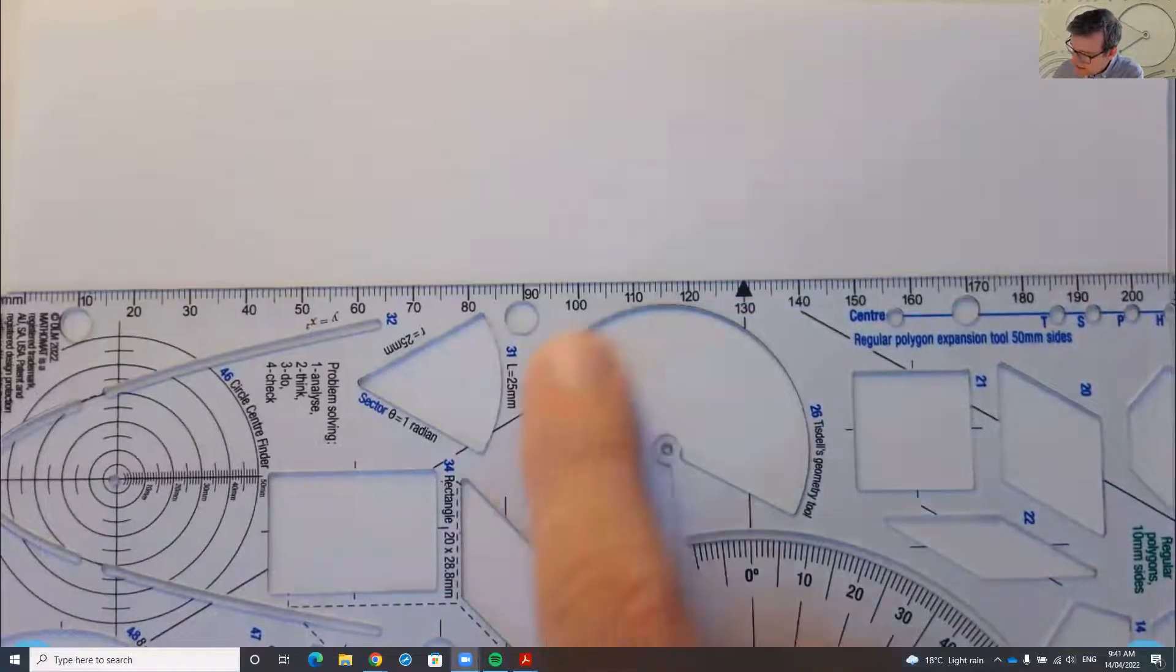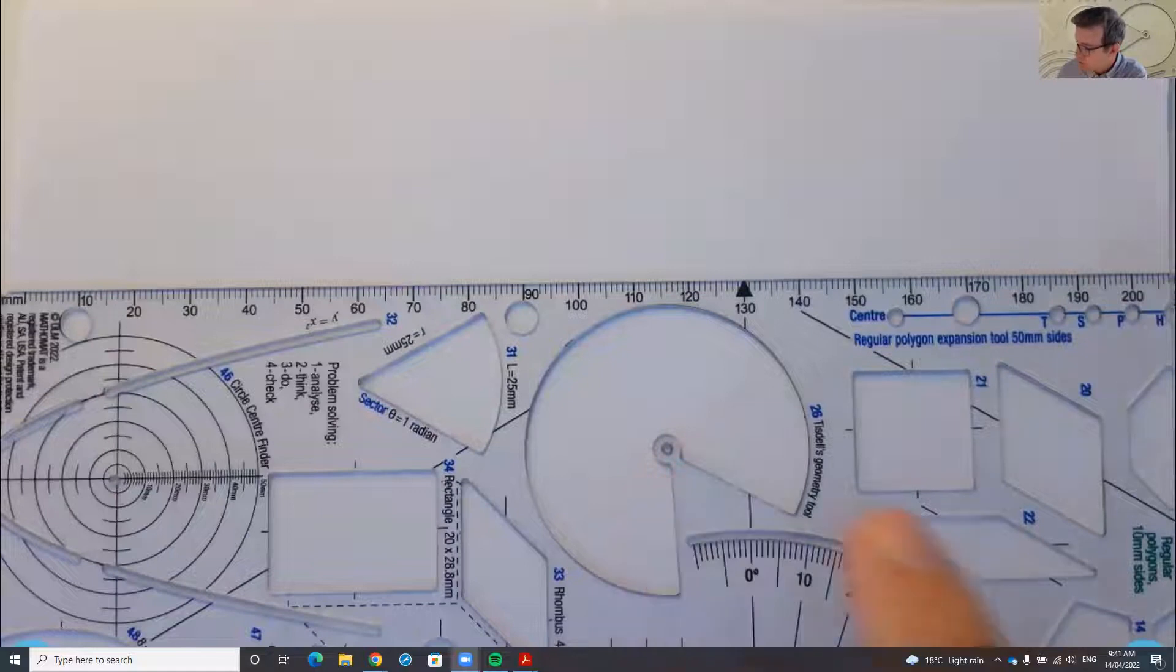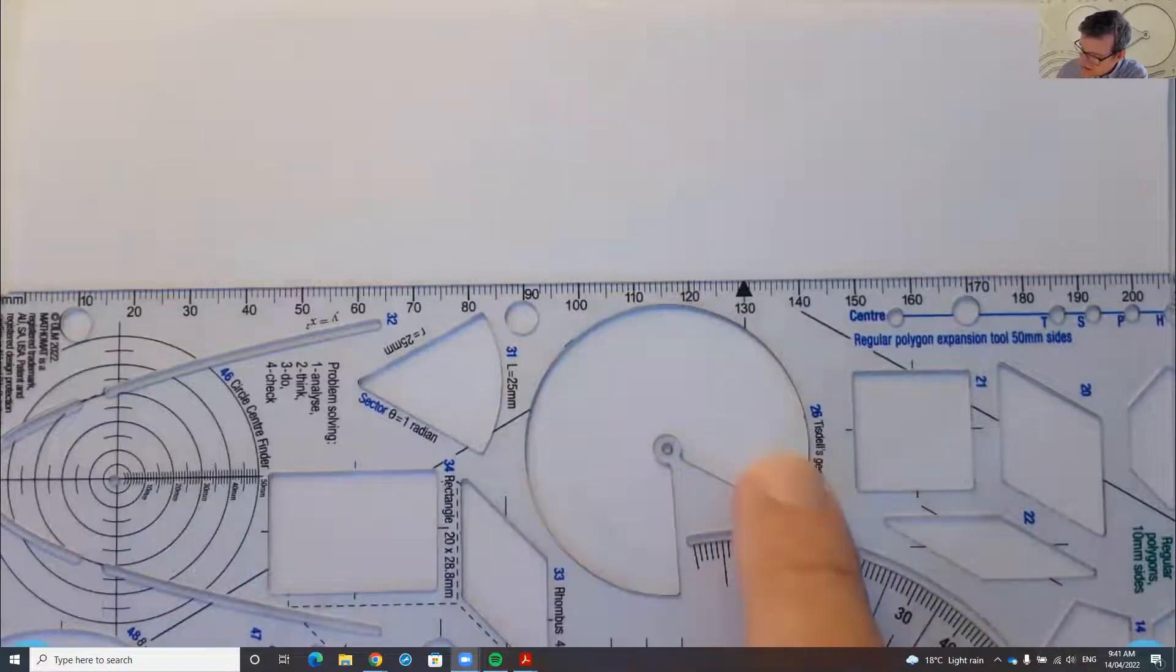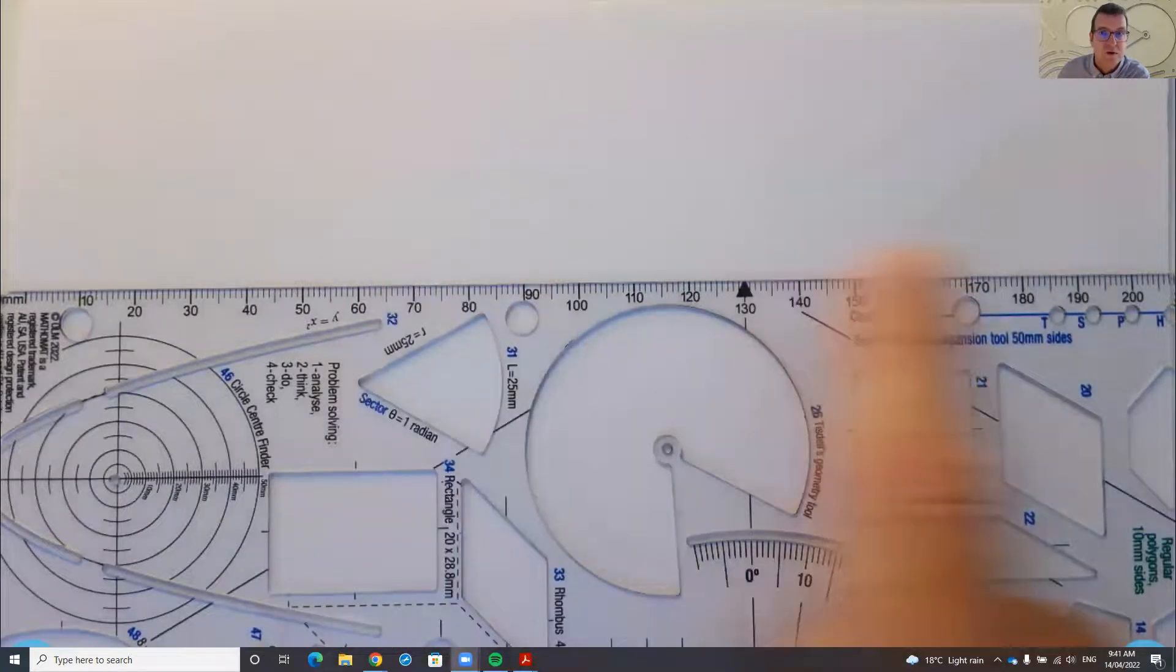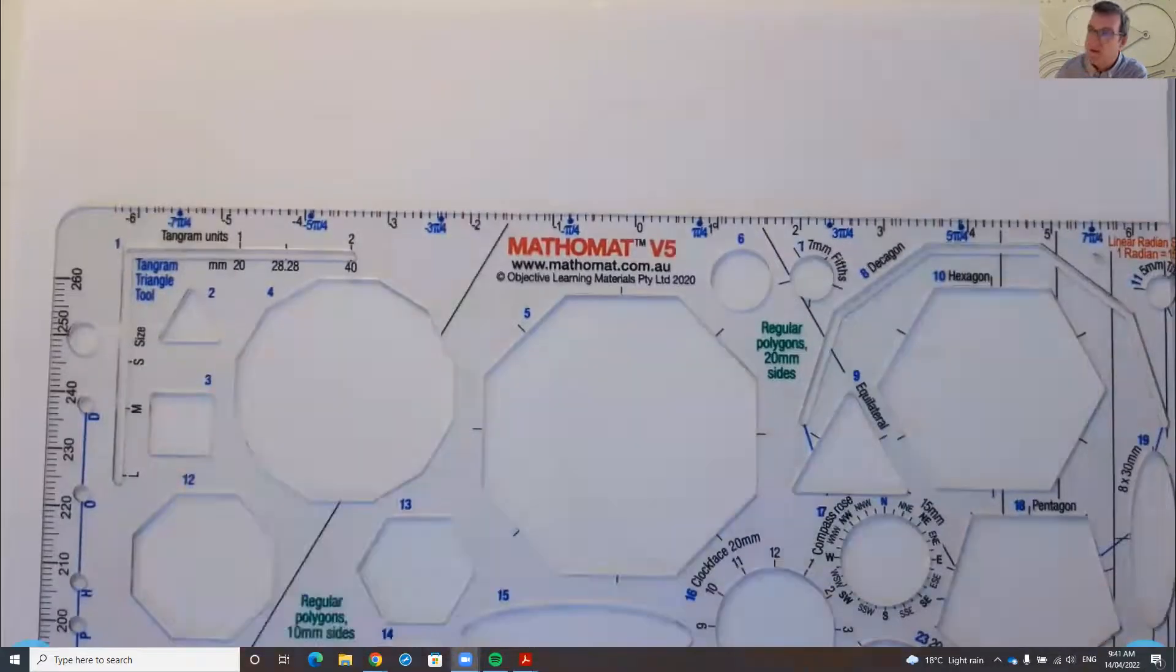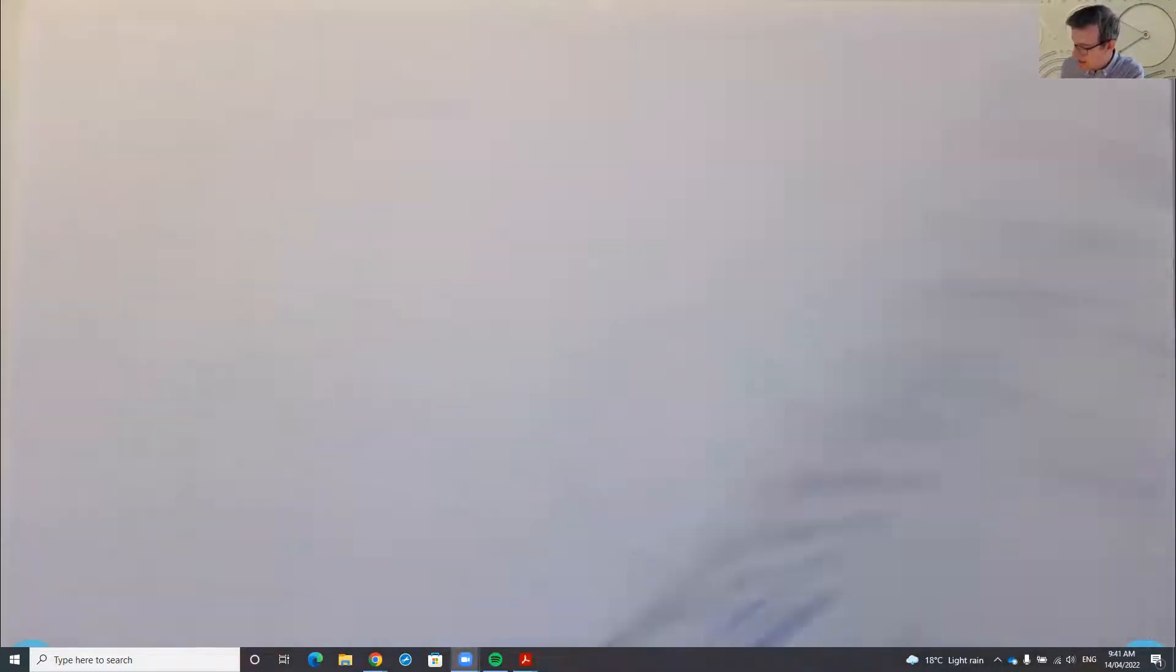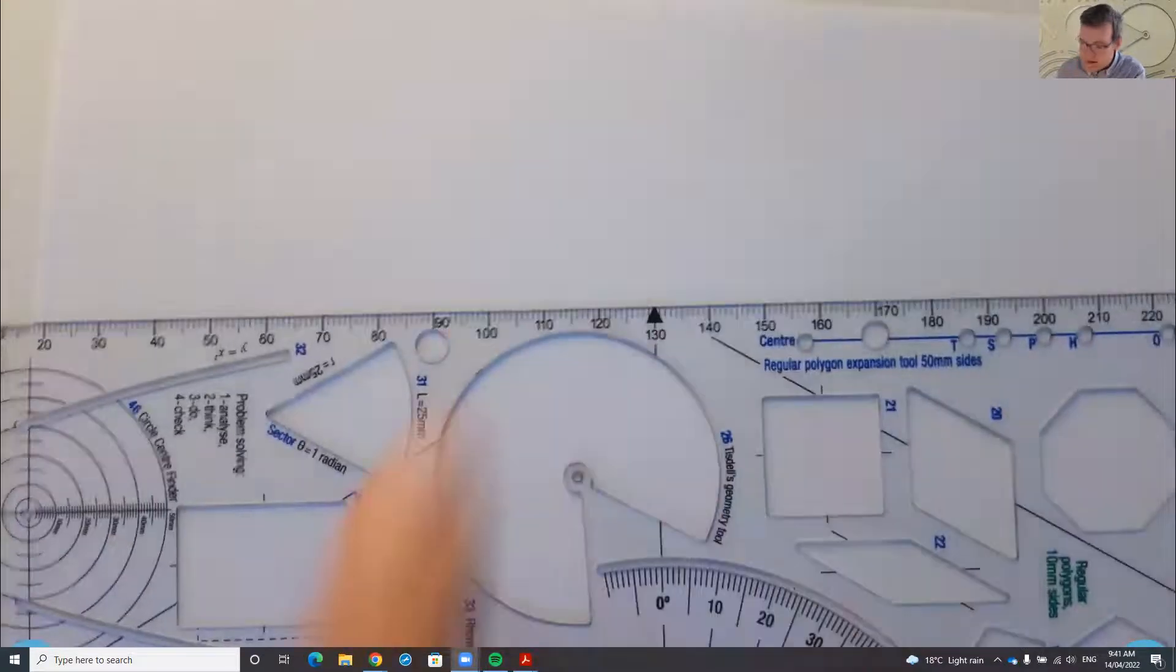This is the circle arc template that I'm going to be talking about today. It's got a positionable center point and you can draw an arc of about 300 degrees and there's a straight edge right next to it. This is part of a bigger tool called a Mathemat and there's lots of interesting shapes and markings on here, but these are the two that we will be working with today.